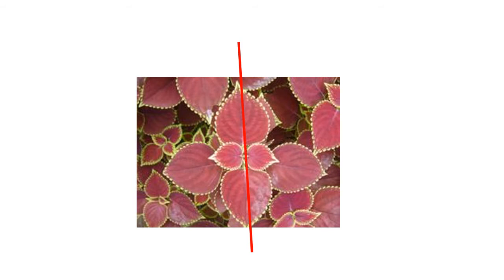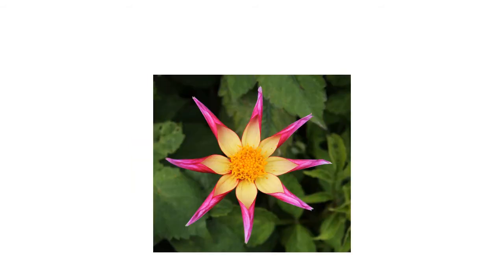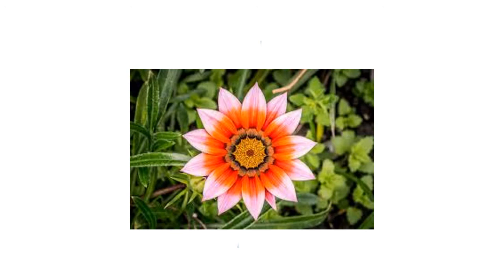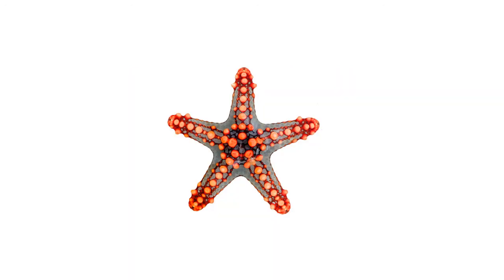This is a coleus plant — it can also be divided into two parts with the help of a vertical line, and these two parts are identical or similar to each other. This is a dahlia flower; by using a horizontal line we can divide it into two parts. This is a fern plant — here also we can use a vertical line to make it into two equal parts.